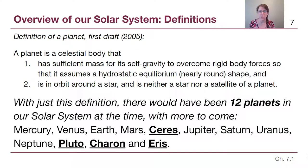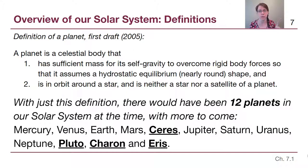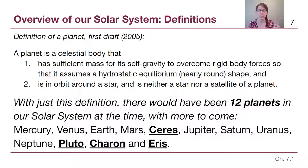The first draft definition came about in 2005 from the International Astronomical Union. It stated that a planet is a celestial body that has sufficient mass for its self-gravity to overcome rigid body forces so that it assumes a hydrostatic equilibrium shape — essentially, it's round — and it is in orbit around a star and is neither a star nor a satellite of a planet. This excluded binary stars and moons from the definition.